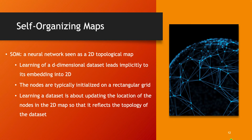Self-organizing maps are a form of neural networks, but their particular feature is that their nodes are thought of as dots in a 2D space. In other words, this neural network is a 2D topological map, where each node of the network is placed somewhere on a 2D grid.